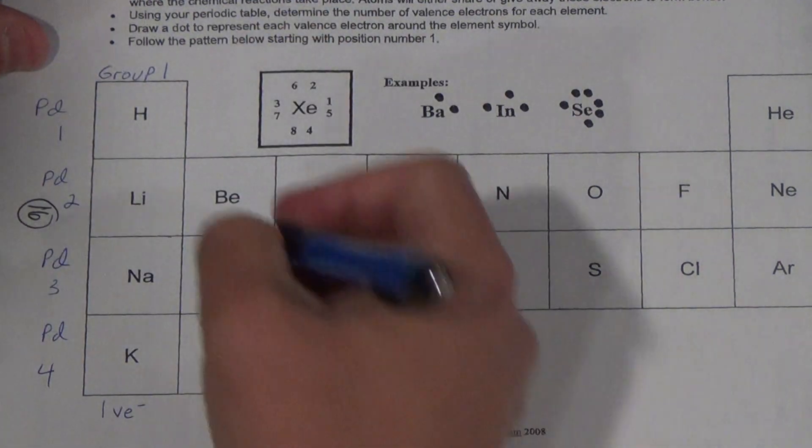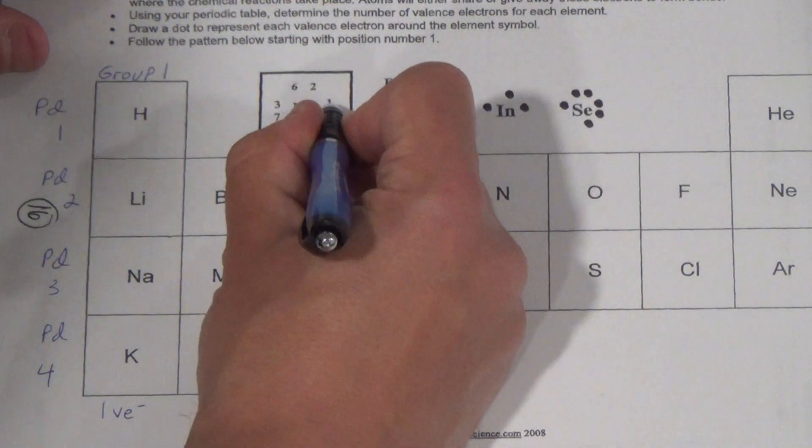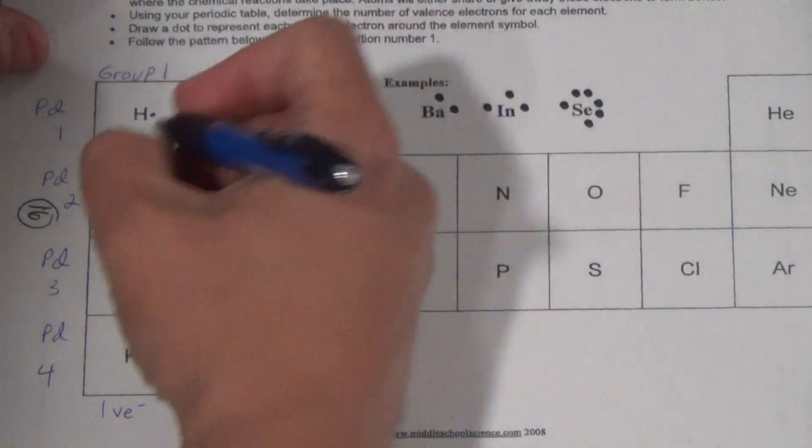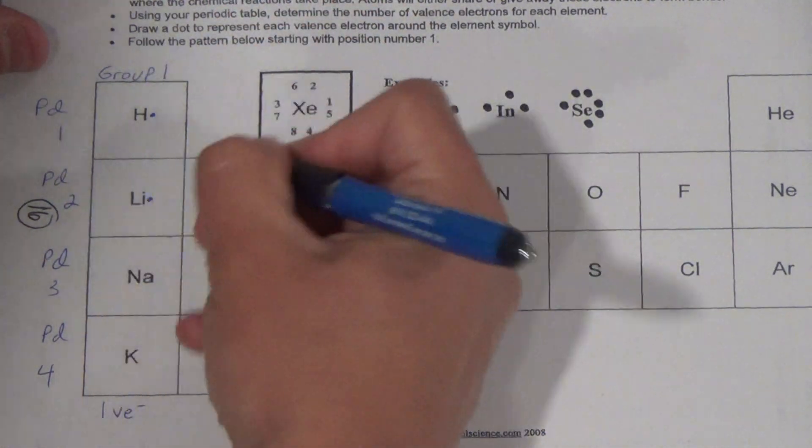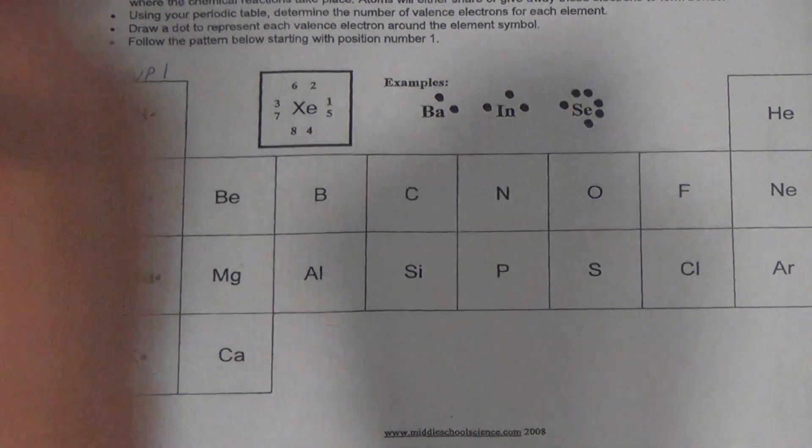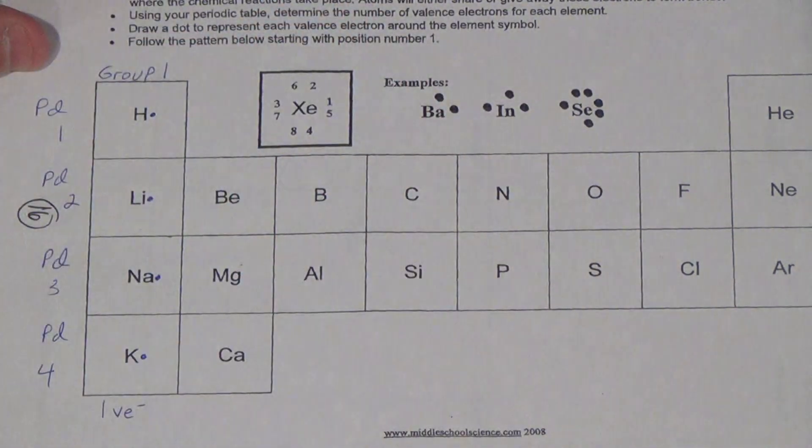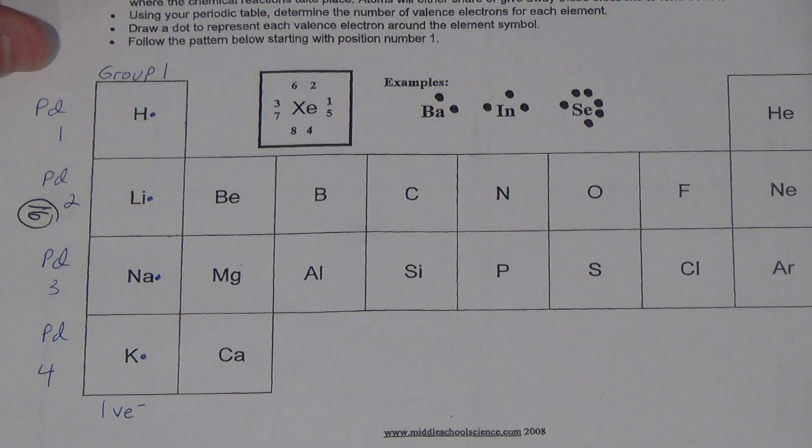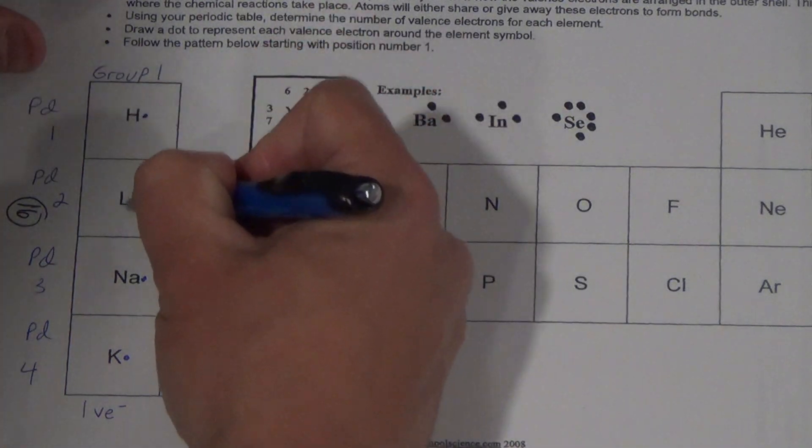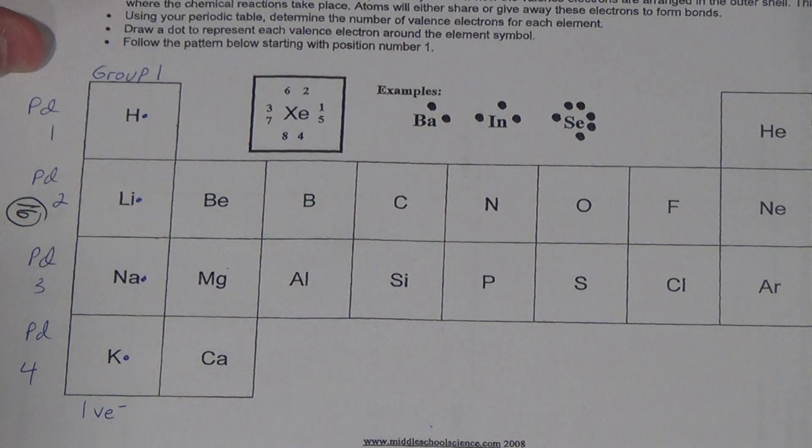And how do we draw the Lewis structures? Well, they each get one, so you start right here. Watch this, one, one, one, and one. So each of these four elements each have one valence electron. Is that clear? Each of these four have one valence electron.